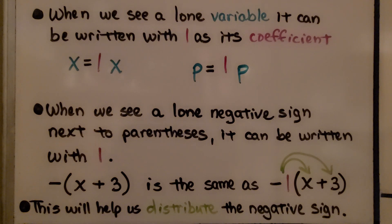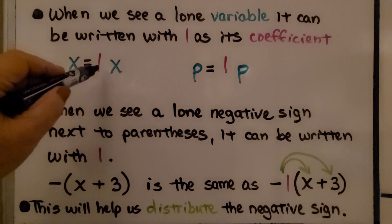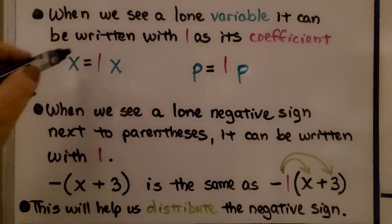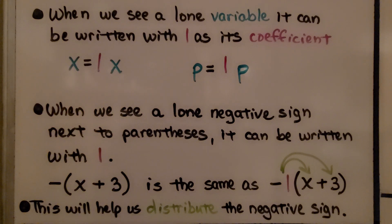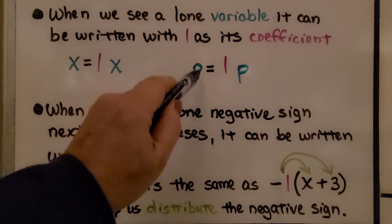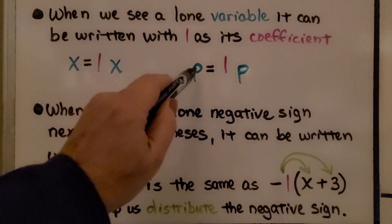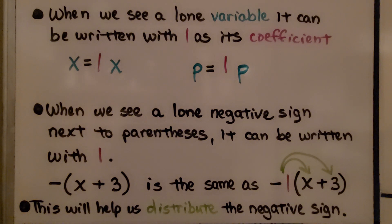When we see a lone variable, it's all by itself, it can be written with a 1 as its coefficient. If we see an x here, that's just 1x — we can write it as 1x. A lone variable can always be written with a 1 as its coefficient.